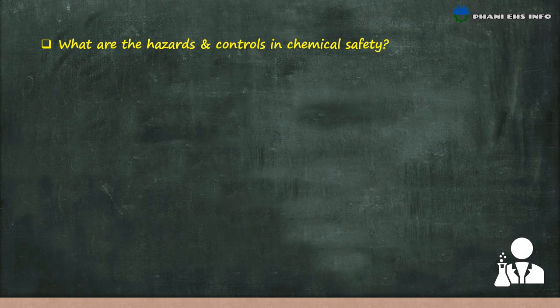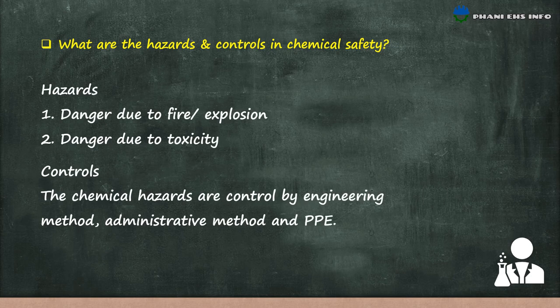What are the hazards and controls in chemical safety? Hazards include danger due to fire, air explosion, and danger due to toxicity. Chemical hazards are controlled by engineering methods, administrative methods, and PPE.